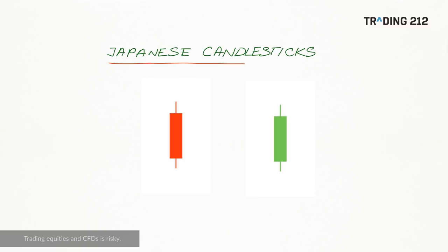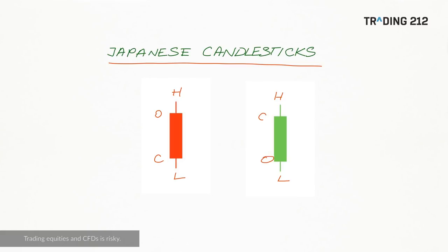With Japanese candlesticks it's pretty similar — the same four pieces of information, open, high, low, close, being presented graphically. The high and the low are represented by the wick either side of the candle's body. Whether it's red or green represents whether the close was lower or higher than the open. With a red candlestick the open is at the top and the close at the bottom, and it's the other way round with a green candle. Sometimes this is a black body for a down candle and a white or empty body for an up candle, but red and green are used in Trading212's web app.